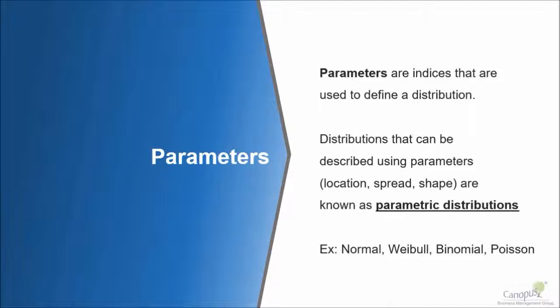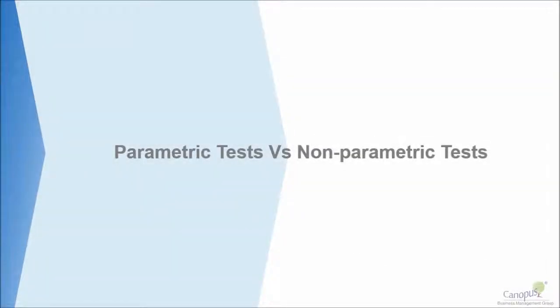Anything that has a characteristic that can be defined by us and can be put in the form of an equation is what we call as a parametric distribution. But there are also distributions that don't have any definite shape.